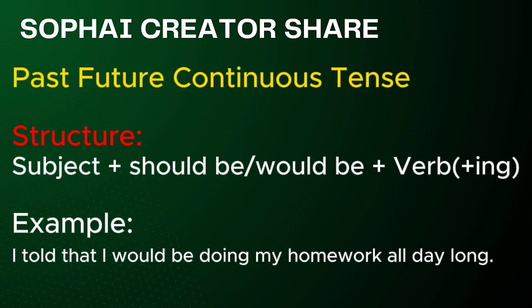Past future continuous tense. Structure: Subject plus should be or would be, plus verb plus -ing. Example: I told that I would be doing my homework all day long.